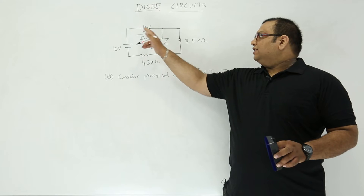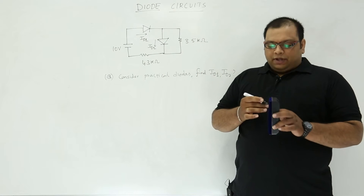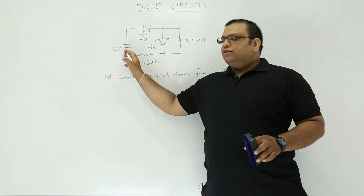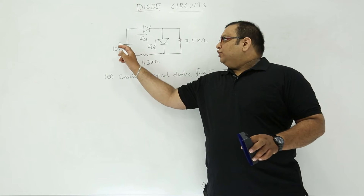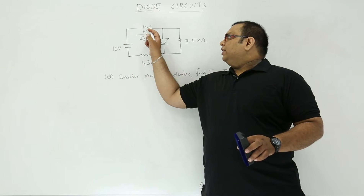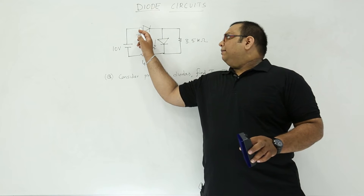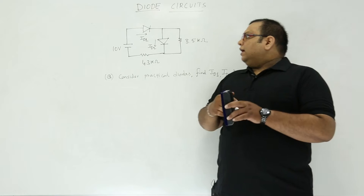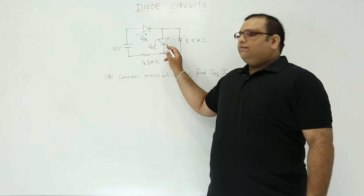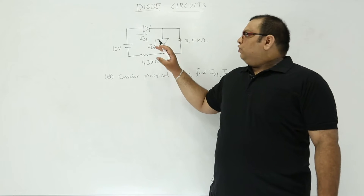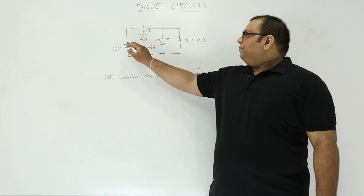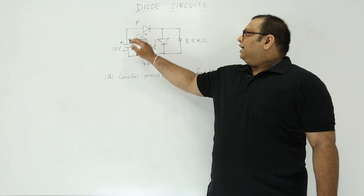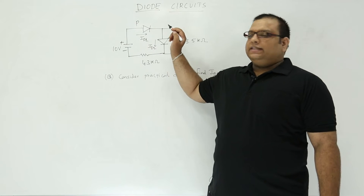That means the current in the first diode as well as the current in the second diode. When you look at the circuit, here we have a voltage source of 10 volts — the positive polarity is connected to the P side of the diode and the negative polarity is connected to the N side. So we can assume the diode is going to be forward biased.